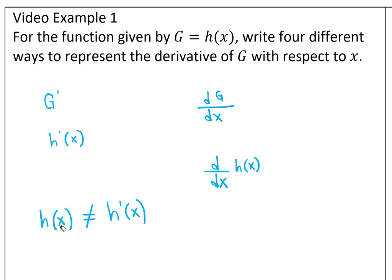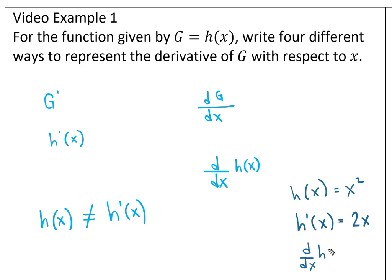You have to keep in mind that if you put equal signs between your lines, you're saying that they're equal. That's why we always make one statement on one line, and then under it we make a different statement. For example, h(x) = x² and h'(x) = 2x. Notice that the first line is not equivalent to the last two lines, so you have to pay attention to the notation and what you're saying when you put equal signs between statements.